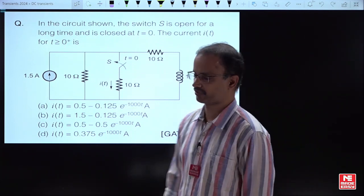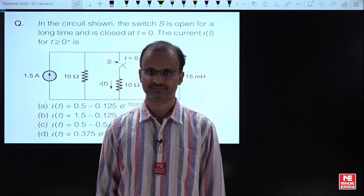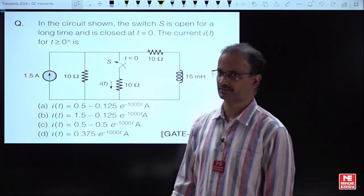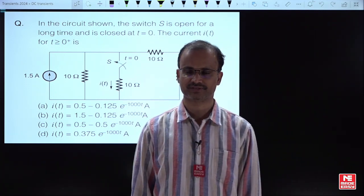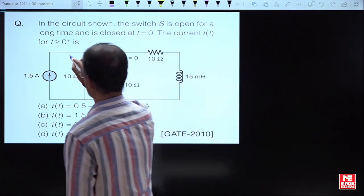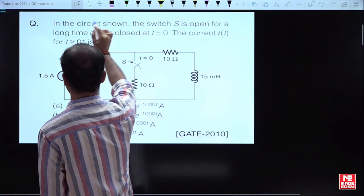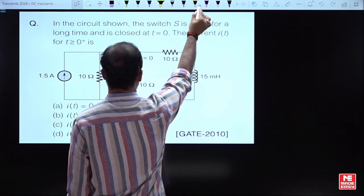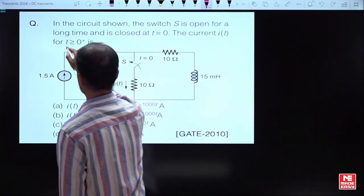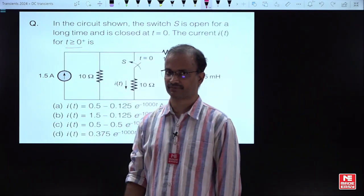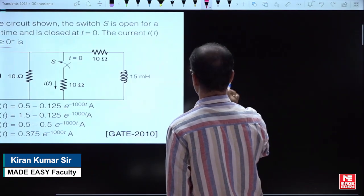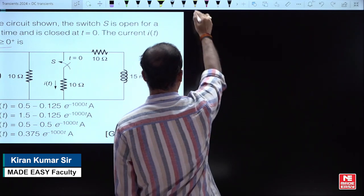In this example, the requirement is the complete response of current in the 10-ohm resistance. As per the given information, we need to find the complete response. To find the complete response, we can use the general formula.